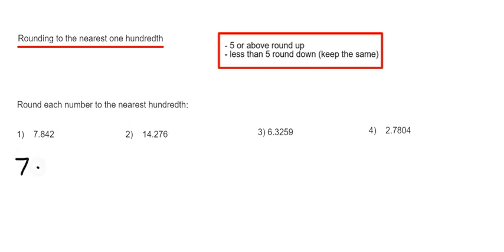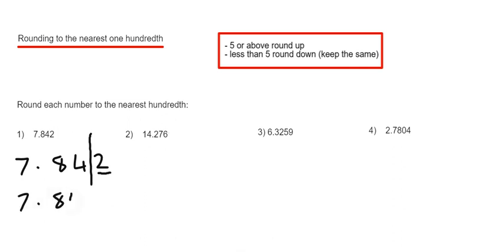So it's 7.842. What I'm going to do is put a line in after the hundredths column — that is the second number after the decimal point. We now have two choices: we can either round the number down to 7.84 or round it up to 7.85. To decide, we look at the number after the line, which is a 2. Since this number is less than 5, that means our number is closest to 7.84.